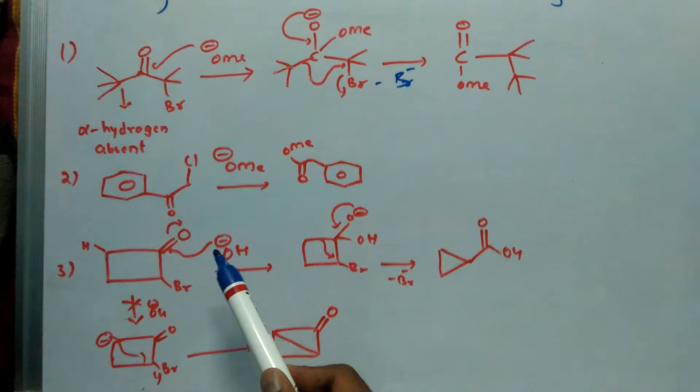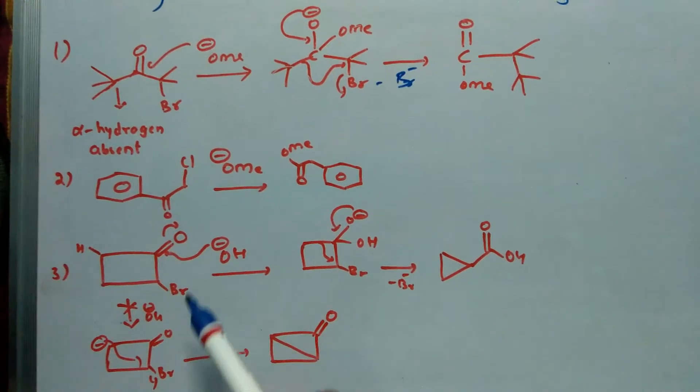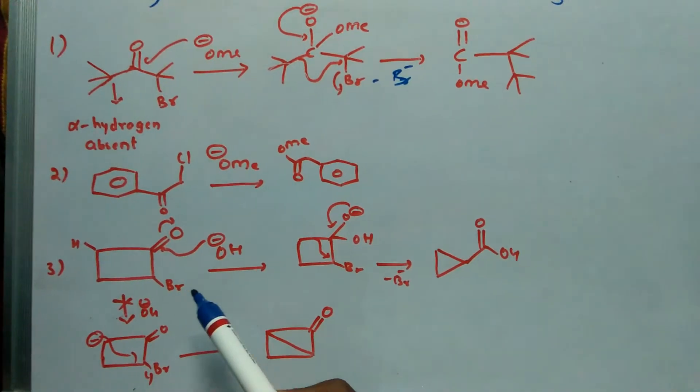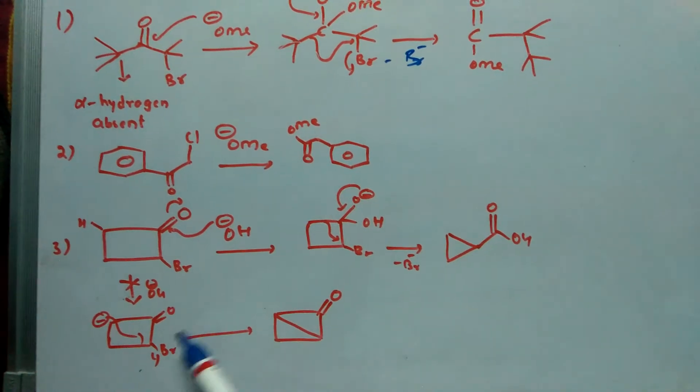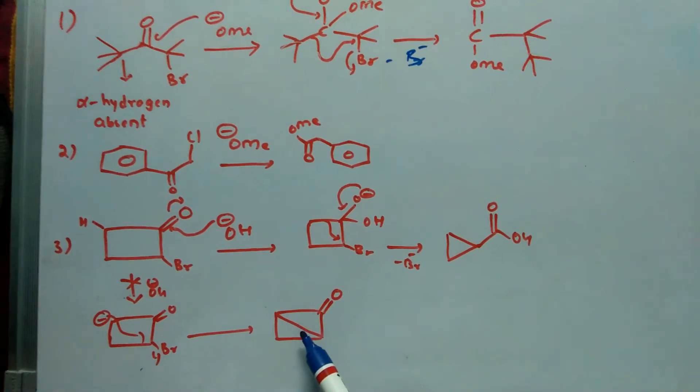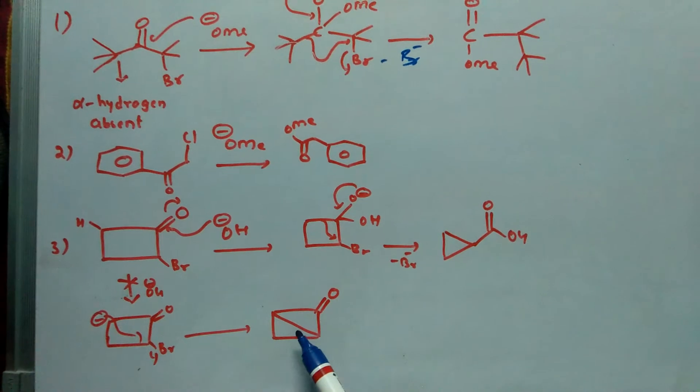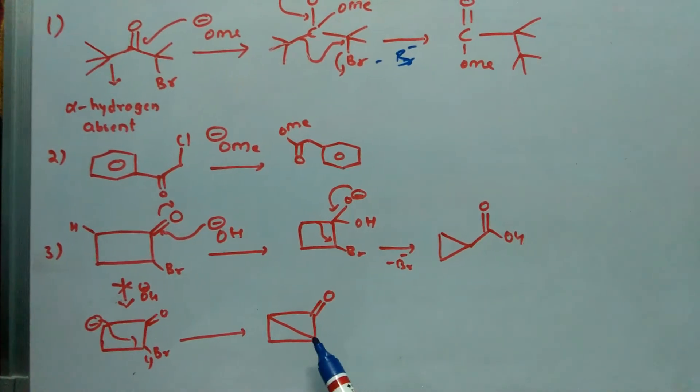Here in cyclobutanone substituted compound, this type of reaction doesn't occur. The cyclopropanone intermediate doesn't form because it is a highly strained molecule, highly unstable.